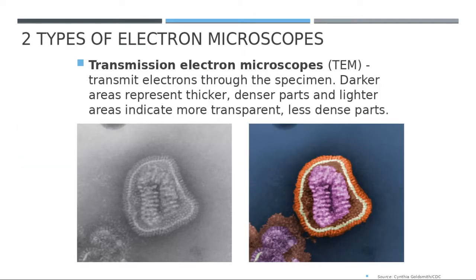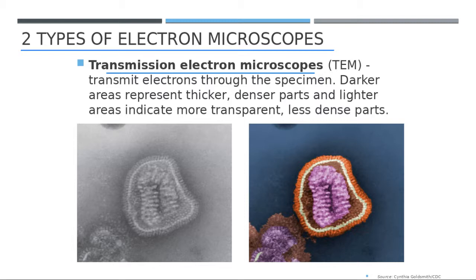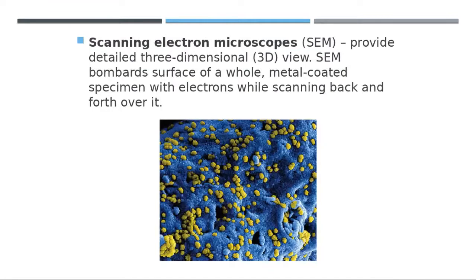There are two types of electron microscopes. The first is the transmission electron microscope (TEM), which produces a regular 2D image. The second is the scanning electron microscope (SEM), which produces a 3D image that looks like a real three-dimensional object.